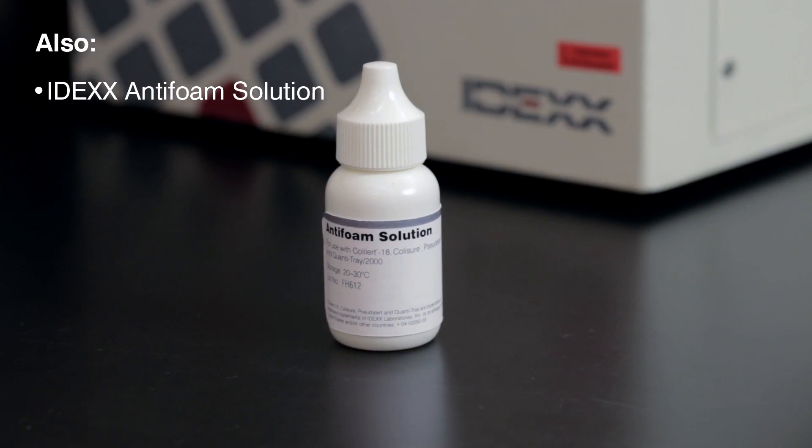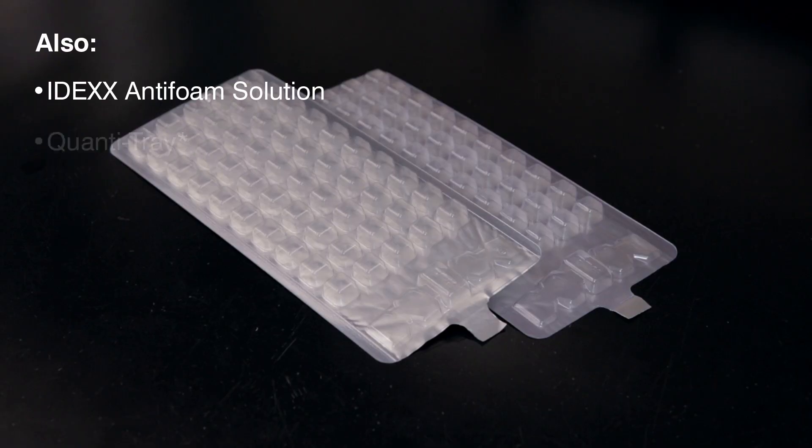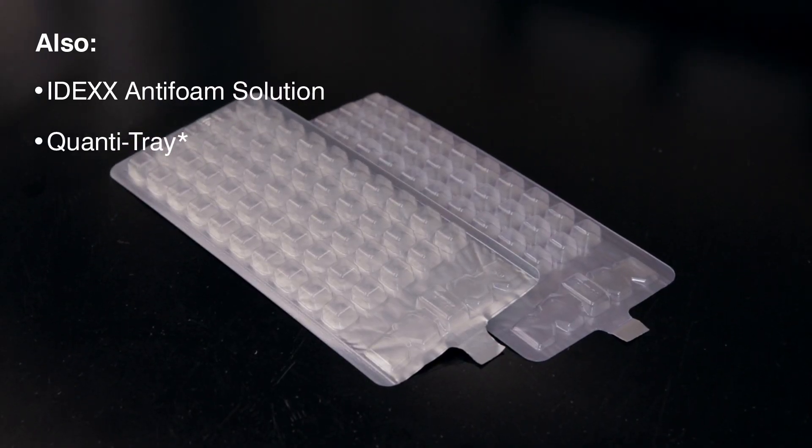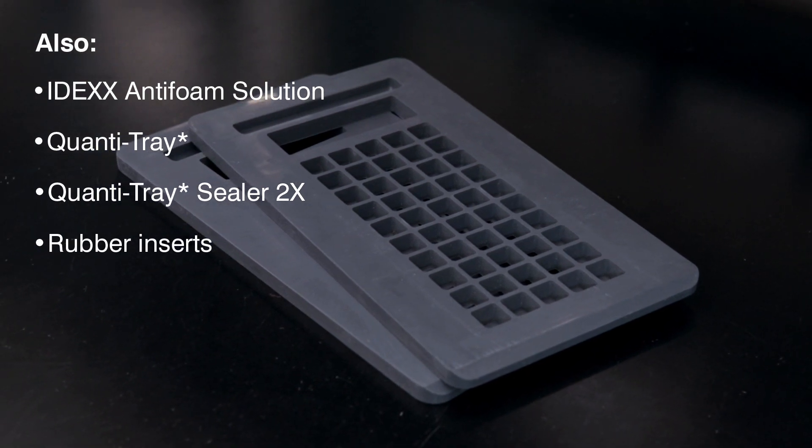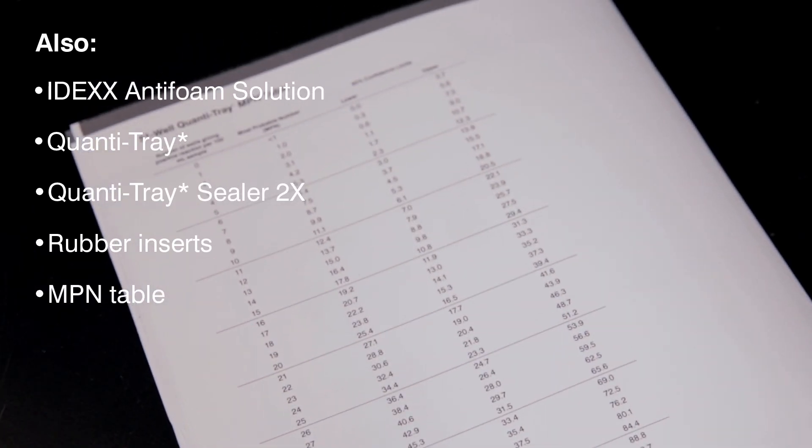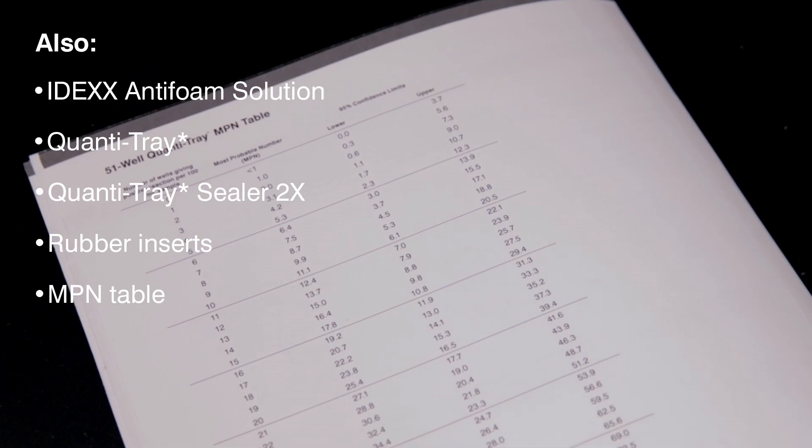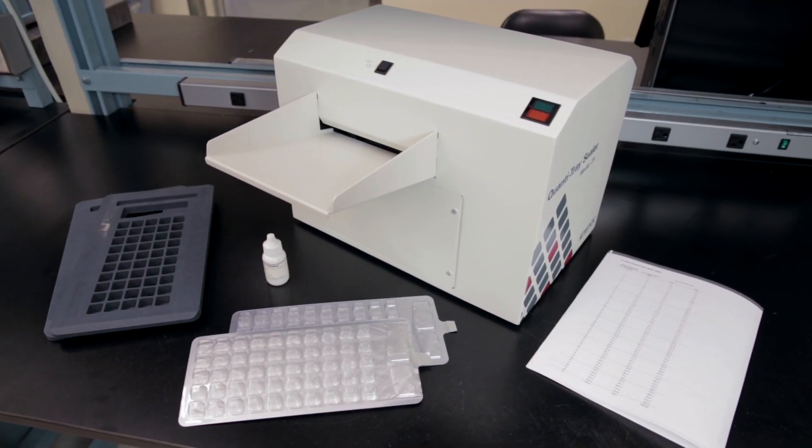In addition, you'll need Idex anti-foam solution, an Idex Quantitray, a Quantitray sealer 2X, Quantitray rubber inserts, and the most probable number table included in the Quantitray box. All of these items are available from Idex.